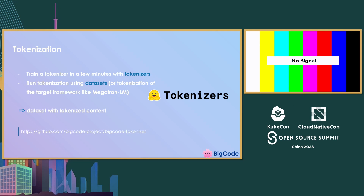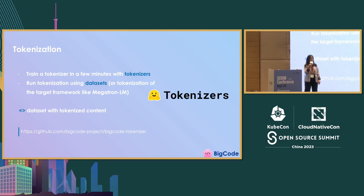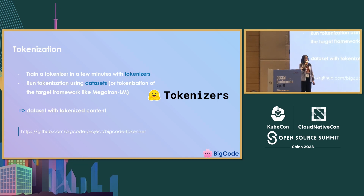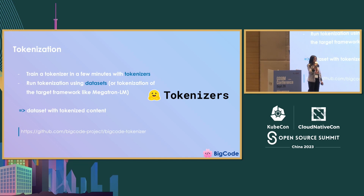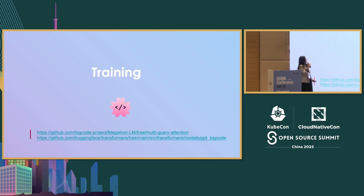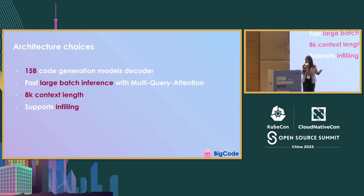The last step was to tokenize the dataset. If you're using Hugging Face Transformers or Trainer, you can tokenize the dataset with tokenizers. Or if you're using a special tool like we did — Megatron-LM — it already has some tools to do tokenization. Since you train these models on text, you need numerical representations.